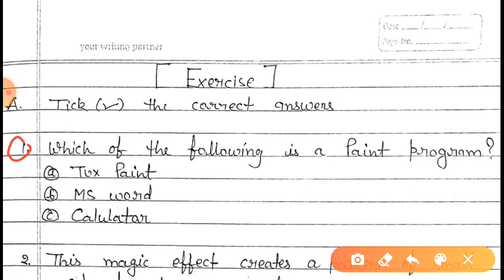Look at the question carefully. The question asks: among the three options given below, which one is a paint program? The options are Tux Paint, MS Word, and Calculator. Calculator is used for calculations, so that is wrong. MS Word is a word processing software used for typing, so that is also wrong. Both are cancelled. Tux Paint is the remaining option — Tux Paint is the right answer. Tux Paint is a paint program.